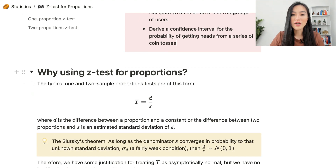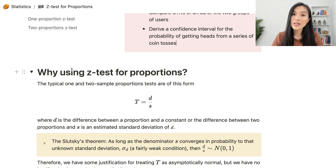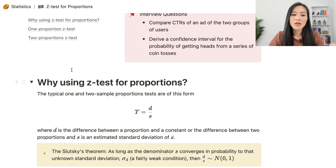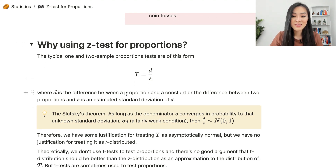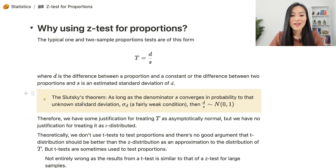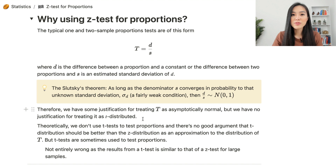The first topic I want to focus on is why we want to use the z-test for proportions. Some people get confused by this, and they don't know if we should use the z-test or t-test for proportions. The typical one and two sample proportions tests are of this form. The test statistic is d over s, where d is the difference between a proportion and a constant, or the difference between two proportions, and s is an estimated standard deviation of d. Based on Slutsky's theorem, as long as the denominator s converges in probability to that unknown standard deviation sigma d, then d over s is approximately normally distributed. Therefore, we have some justification of treating the test statistic as asymptotically normal, but we don't really have any justification for treating it as t-distributed.